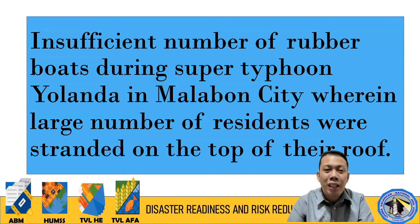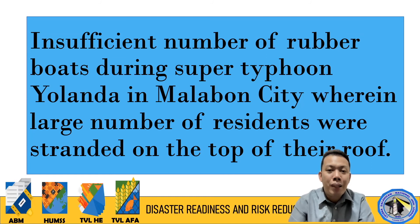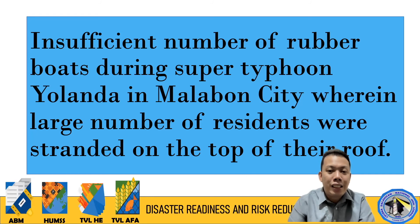Another situation: during a typhoon and flooding, people are stranded on top of their rooftops. They could not be evacuated because there were not enough rubber boats for rescue. So they remained stranded on their rooftops. The answer is C — capacity and efficiency to reduce disaster risk, because there was a shortage of rescue resources.